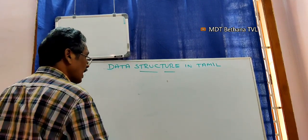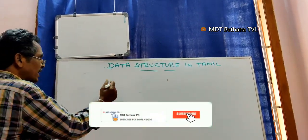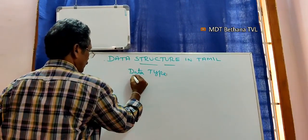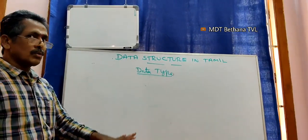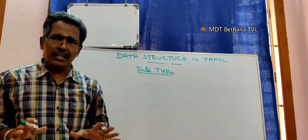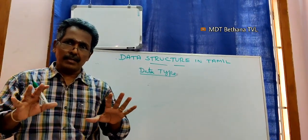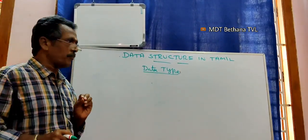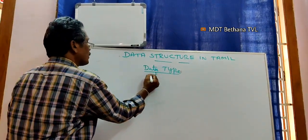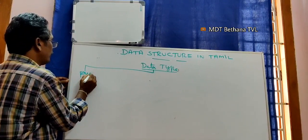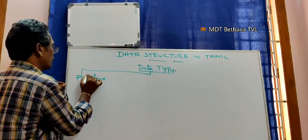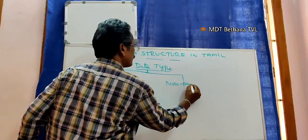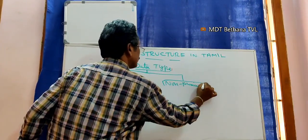Data structure overview — over concept, over heading. Data type: there are two types — primitive data type and non-primitive data type.